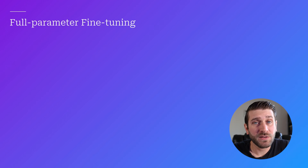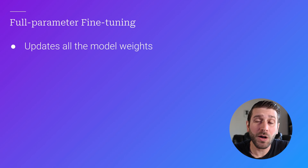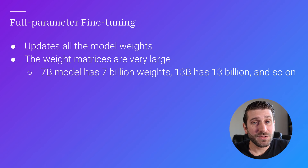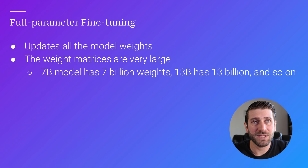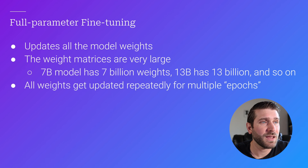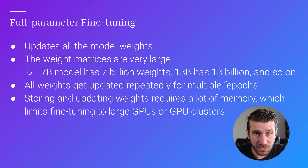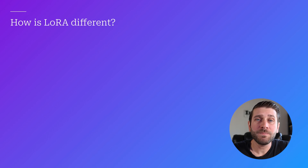Let's look at how full parameter fine-tuning works. It updates all the model weights — all the parameters — which are very large matrices of numbers. A 7 billion parameter model has 7 billion weights, 13 billion has 13 billion, and so on. All these numbers get updated repeatedly — it could go through your training data five times, that would be five epochs. Storing and updating all those weights takes a ton of memory, limiting full parameter fine-tuning to only very large GPUs or GPU clusters. If we're constrained by hardware, we can't test all these different paths to take our base model. So LoRA attempts to solve this problem in two key ways.